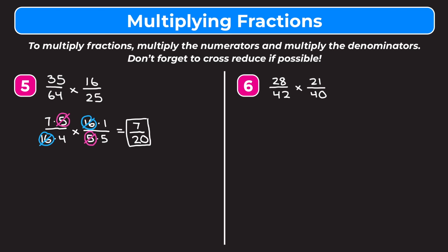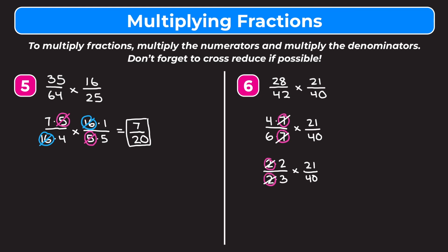Problem 6 is 28 over 42 times 21 over 40. Notice we can simplify 28 over 42 first since 7 goes into both. Rewrite 28 as 4 times 7 and 42 as 6 times 7, and leave 21 over 40 as is. Since the 7 appears on both top and bottom of that fraction, we cross it out. Then we see 4 and 6 are both divisible by 2: 4 becomes 2 times 2 and 6 becomes 2 times 3. Crossing out those shared 2s gives us 2 thirds times 21 over 40.